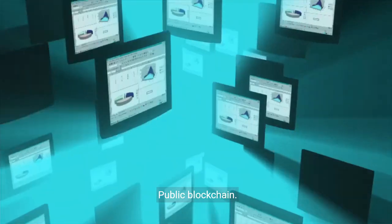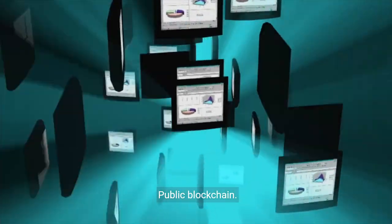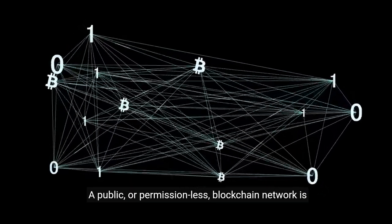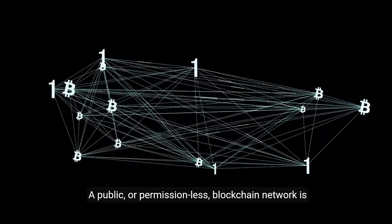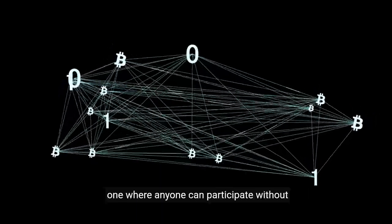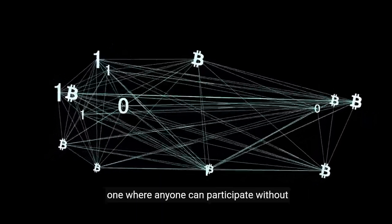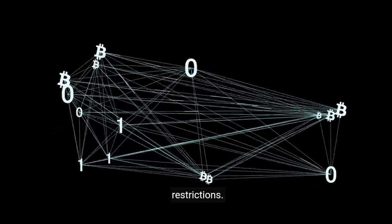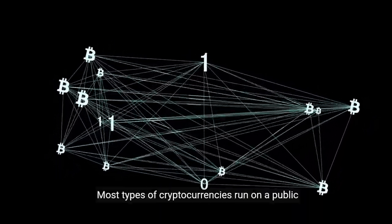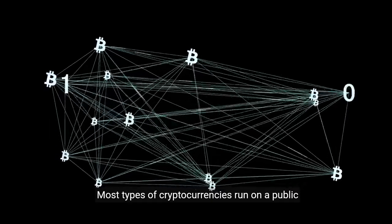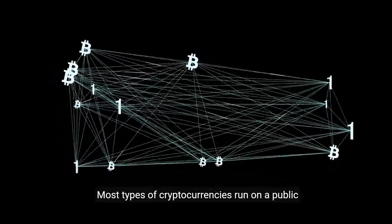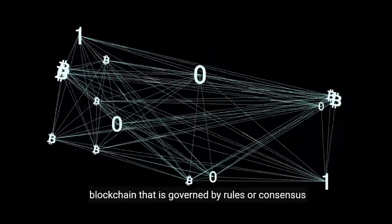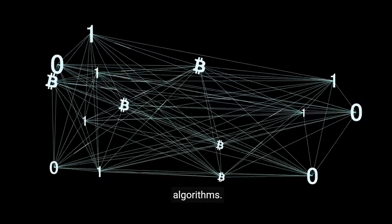Three types of blockchain. Public blockchain: a public, or permissionless, blockchain network is one where anyone can participate without restrictions. Most types of cryptocurrencies run on a public blockchain that is governed by rules or consensus algorithms.